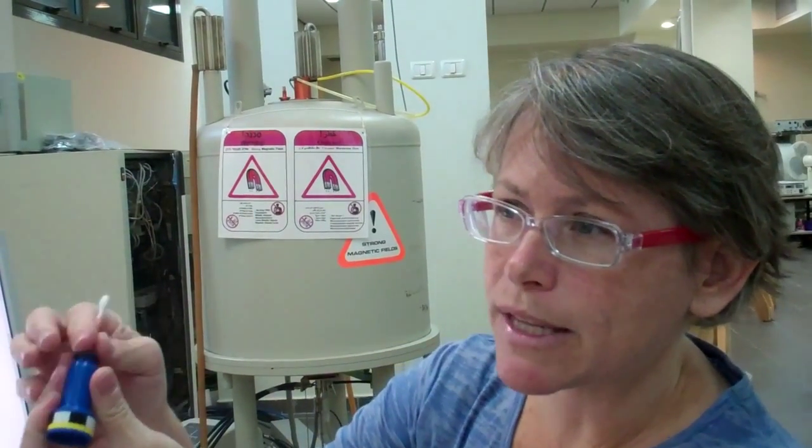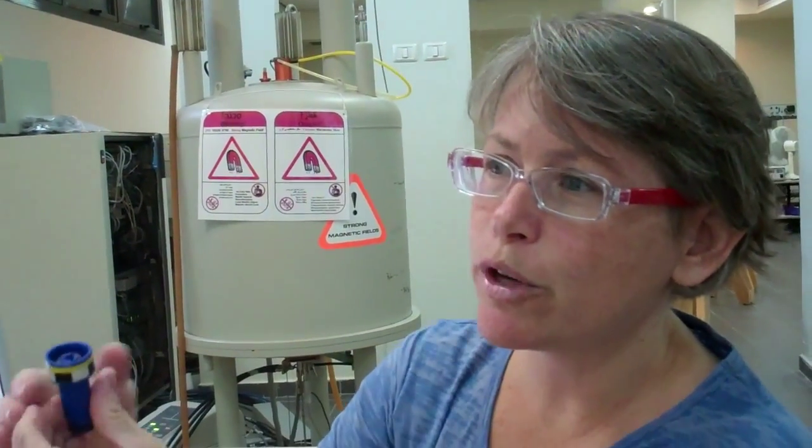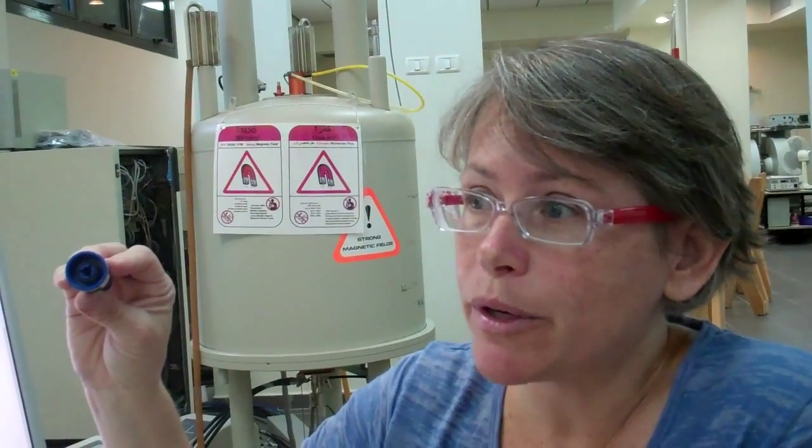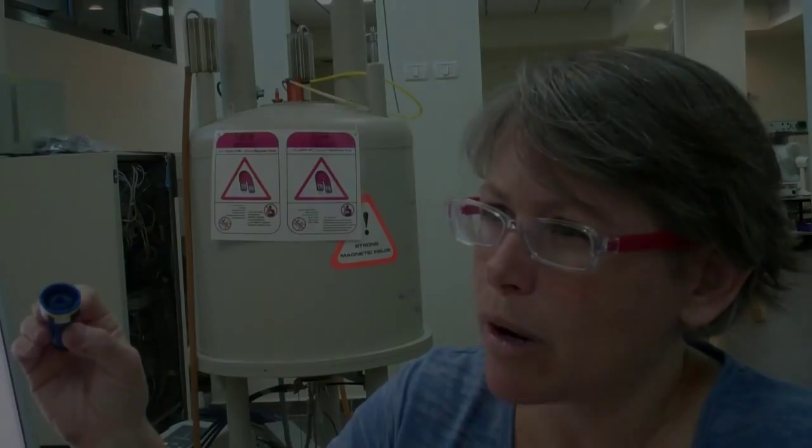We have cotton swabs on the desktops to remove crud from the inside of the spinner before you put it into the magnet. This reduces downtime on the spectrometer, keeps the instrumentation in good condition, and prevents your sample from having spinning problems.